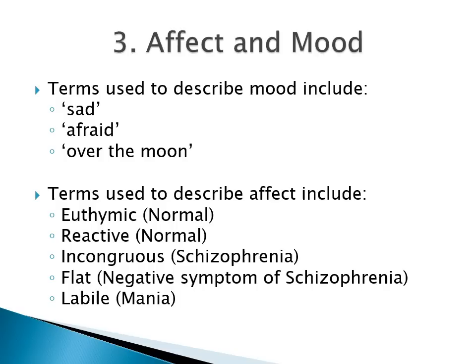A euthymic and reactive affect refers to a normal affect. Incongruous affect, where what the patient is saying and the emotions they are exhibiting seem incongruous, is a feature of schizophrenia — for example, the patient might be talking about something tragic and seem to be giggling at the same time. If negative symptoms are prominent, it is characterized by a flat affect, where the patient has little or no emotional reactivity. Labile affect is a characteristic feature of mania, where the patient might seem very happy but in seconds might start crying for no apparent reason.